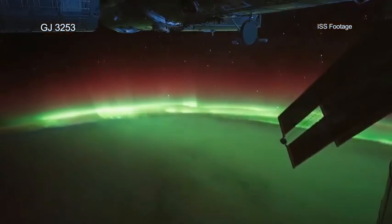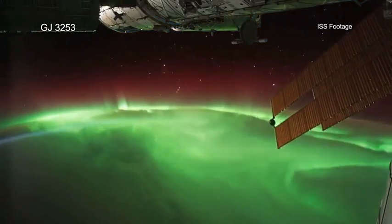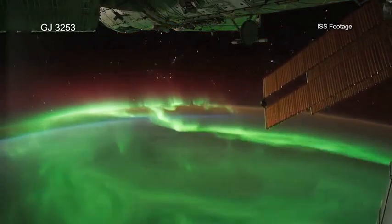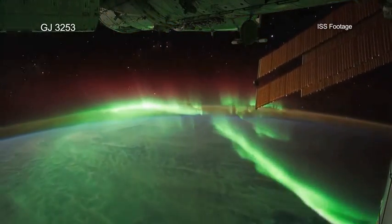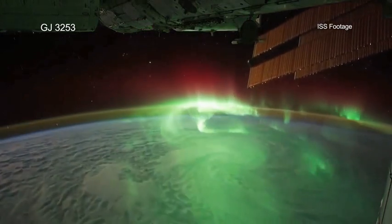On Earth, these solar storms can generate auroras, damage satellites and power grids, and potentially harm astronauts in orbit.